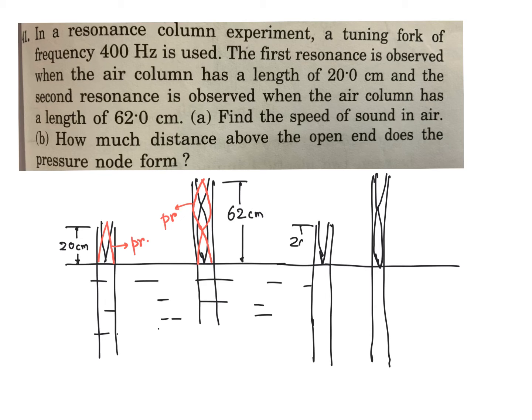This is 20 cm and 62 cm. And suppose the end correction is E. And that is what you ask for. End correction E. That means in the question, I mean in part B. How much distance above the open end does the pressure node form or the displacement anti-node form? Same question.